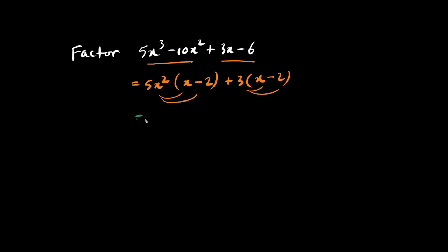We now pull out the GCF, x minus 2, and we set up a huge bracket. x minus 2 times 5x squared, that's this part here, plus 3, when we expand it, is the second term over here.